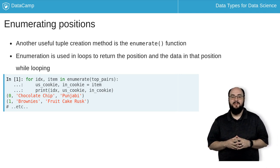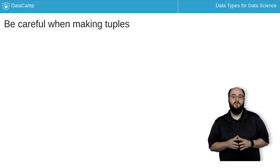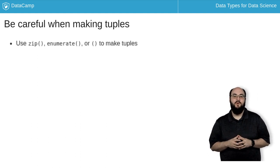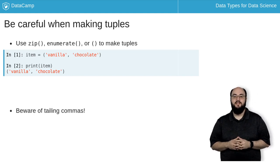Let's look at a bit of responsibility that comes with this power. When we are creating tuples, we can make them with a zip or enumerate or use the parentheses as shown here. However, the real magic for creating a tuple in Python is the comma.